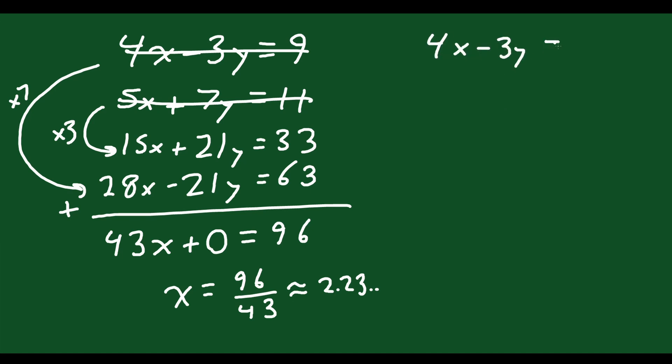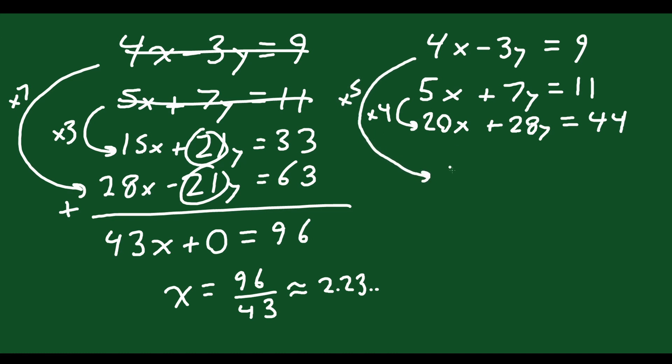So we're going to start the same way: 4x minus 3y equals 9, and 5x plus 7y equals 11. So last time I multiplied the equation with 3 by 7, and I multiplied the equation with 7 by 3, so that those two terms became the same. So we do the same thing here for the x's, right? I'm going to multiply this by 4, so that I get 20x plus 28y equals 44, right? So multiply that whole thing by 4. Then I'm going to multiply this one by 5, so you get 20x minus 15y equals 45.